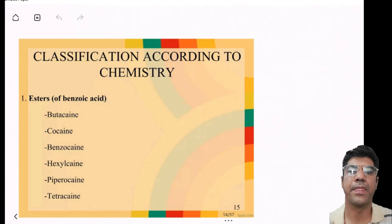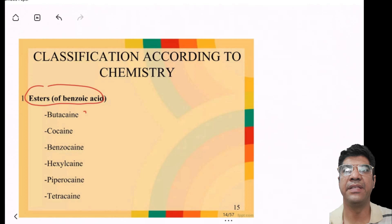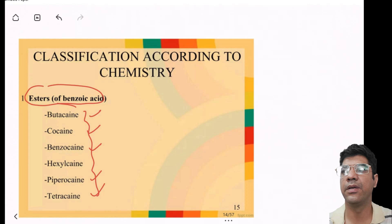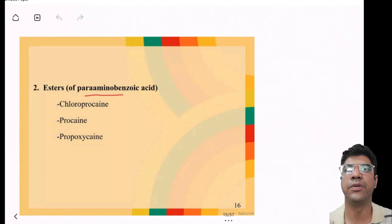Based on chemical classification, local anesthetics are classified as either esters or amides. Examples of esters include butacaine, cocaine, benzocaine, piperocaine, and tetracaine. Esters are derivatives of benzoic acid or para-aminobenzoic acid. Examples of the para-aminobenzoic acid group include chloroprocaine, procaine, and propoxycaine.